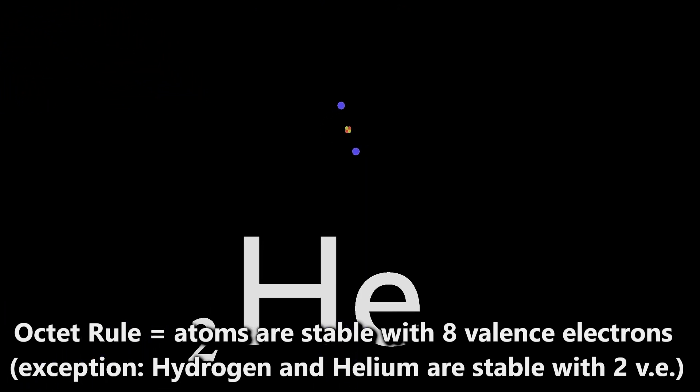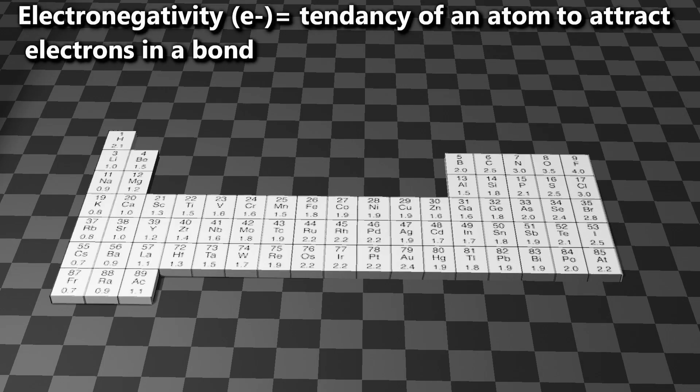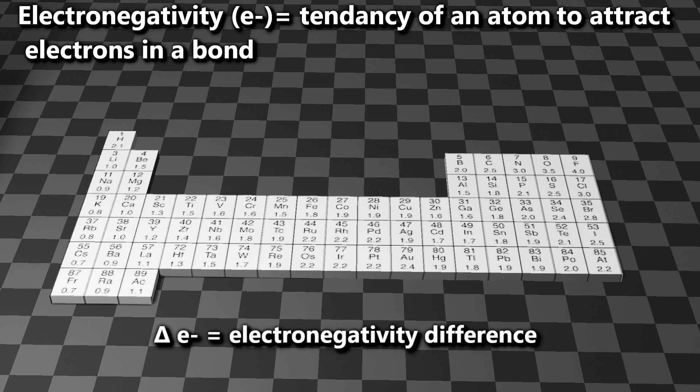The octet rule leads us into another concept called electronegativity, which is the driving force of an atom to attract electrons in a bond. The differences in electronegativity between each atom determine the type of bond between atoms.